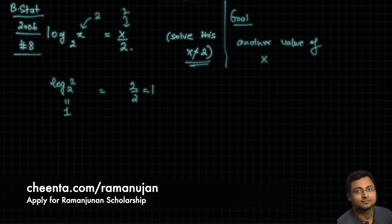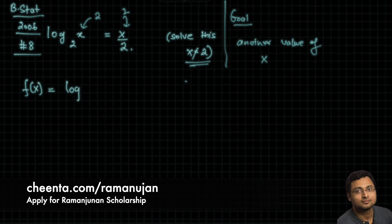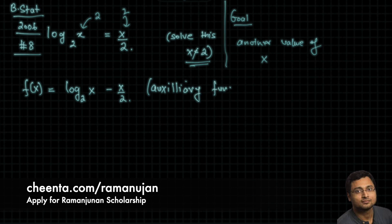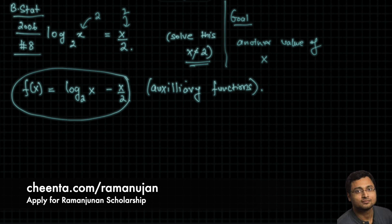We will be using calculus to solve this problem. To do that, let's use an auxiliary function: f(x) = log base 2 of x minus x over 2. These functions, which we often use in problems like this, are known as auxiliary functions. We analyze functions like this to actually find the solution of equations like this.